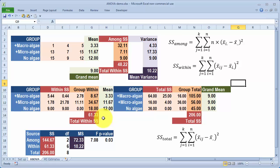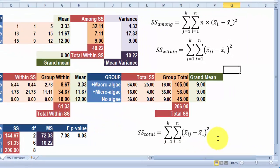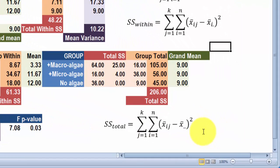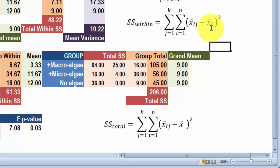The within sum of squares — sometimes called error or residual — compares every individual observation to the mean for its group. Note: in the definitional formula the observation term should be x_ij (without a bar), and the within formula compares x_ij to x-bar_i-dot. That accounts for two of the three sums of squares.